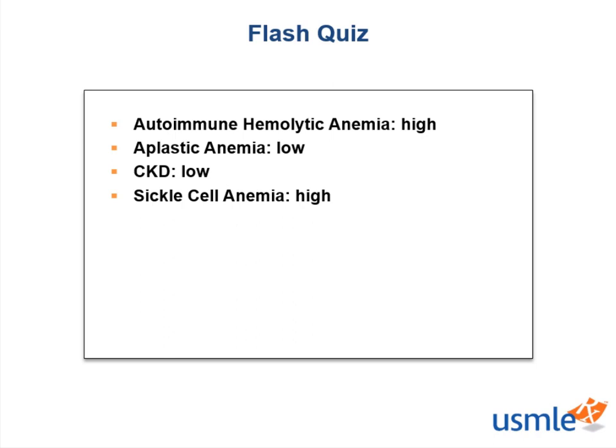Autoimmune hemolytic anemia will have a high reticulocyte index. In any hemolytic anemia there's a destruction problem — it's in the name, the blood is hemolyzed. The bone marrow pumps out immature reticulocytes as fast as possible to compensate. Aplastic anemia will have a low reticulocyte index because the bone marrow has completely failed and cannot produce anything — the reticulocyte index may be abnormally low, close to 0%.